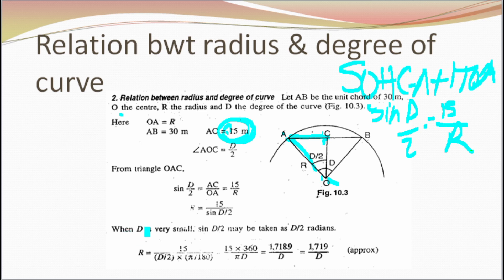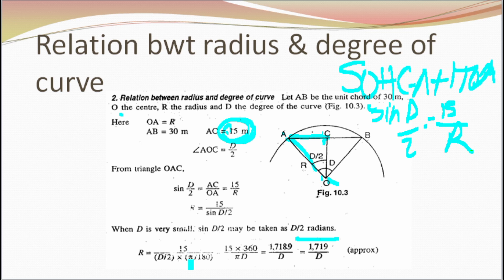Again, when D is very small, sine(D/2) may be taken as D/2 in radians. Remember that to convert degrees to radians, we multiply by π/180. So our R equals 15 divided by D/2 multiplied by π/180.